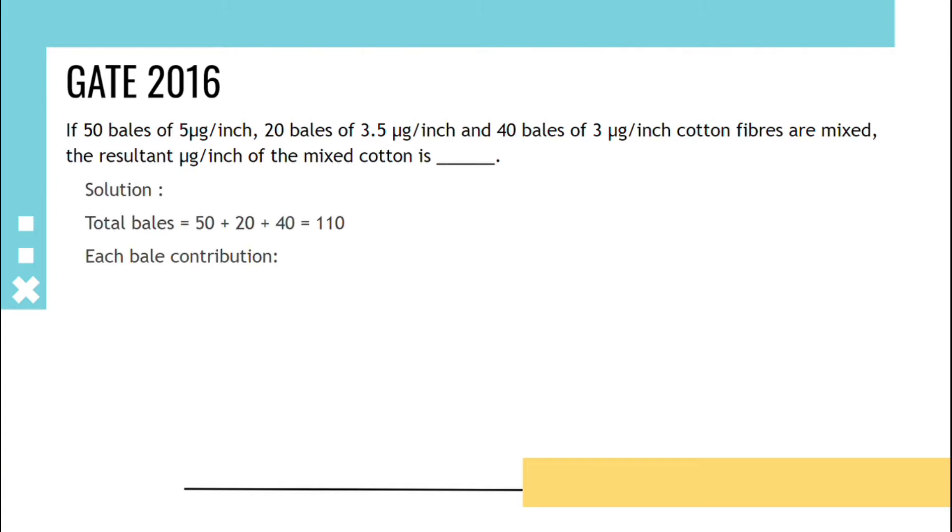Solution is total bales is 50 plus 20 plus 40, that is 110. And each weight contribution we have to find, so that is 50 upon 110, that is 0.45, and 20 upon 110, 0.18, and 40 upon 110, 0.36. So the resultant will be multiplying 0.45 into 5 microgram per inch and 0.18 into 3.5 microgram per inch plus 0.36 into 3 microgram per inch. So answer will be 3.96.